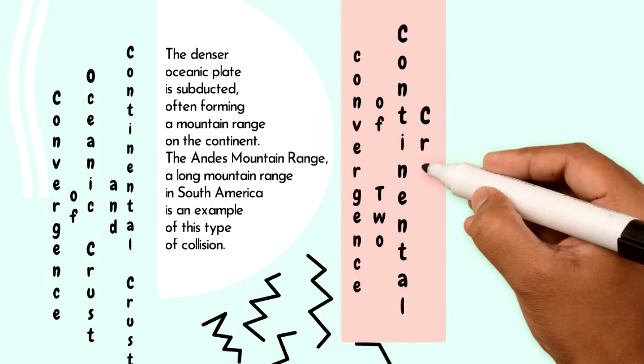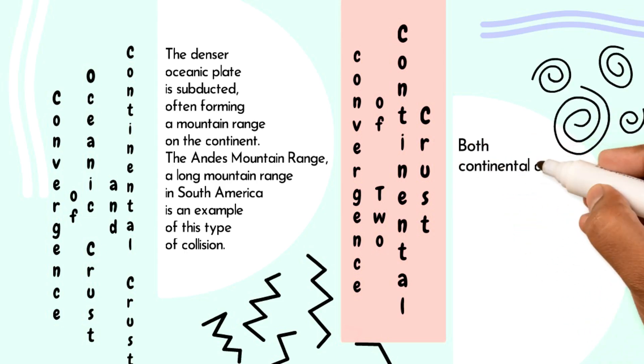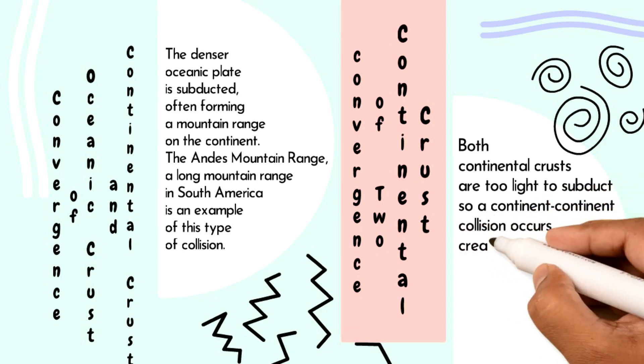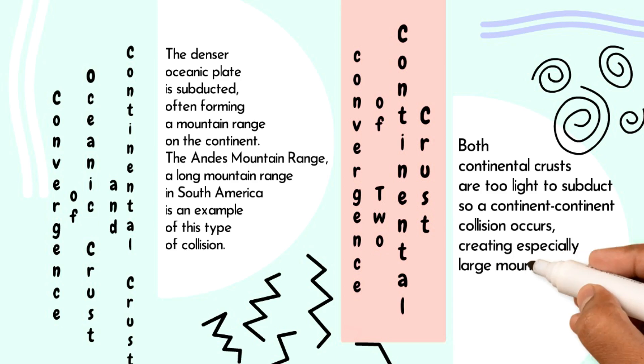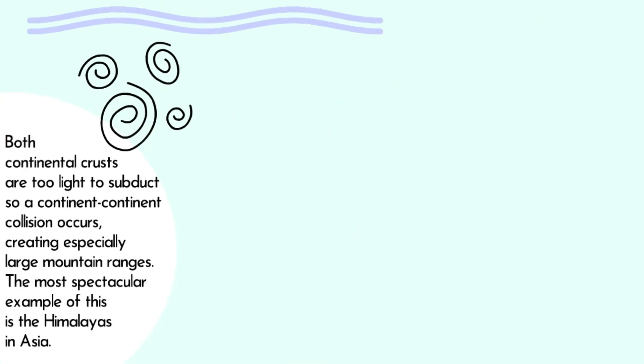Convergence of Two Continental Crusts. Both continental crusts are too light to subduct, so a continent-to-continent collision occurs, creating especially large mountain ranges. The most spectacular example of this is the Himalayas in Asia.